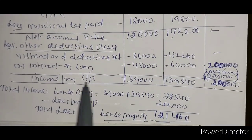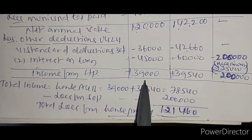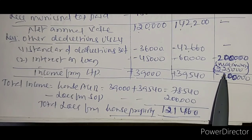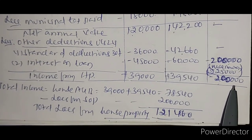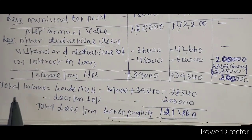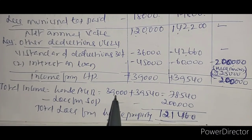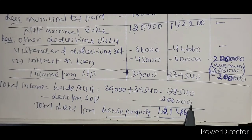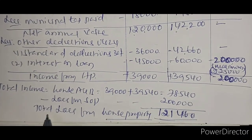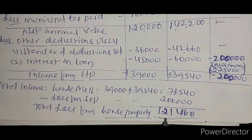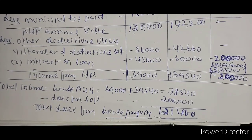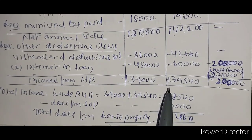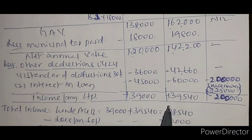Other deductions: standard deduction 30% of net annual value — House A thirty six thousand, House B forty two thousand six hundred sixty. Interest on loan: House A forty five thousand, House B sixty thousand; SOP House C two lakh fifty thousand, capped at maximum two lakh rupees. House A profit thirty nine thousand, House B profit thirty nine thousand five hundred forty, House C SOP loss two lakh rupees. Total income from Houses A and B is seventy eight thousand five hundred forty, minus two lakh loss from SOP — net loss from house property is one lakh twenty one thousand four hundred sixty.